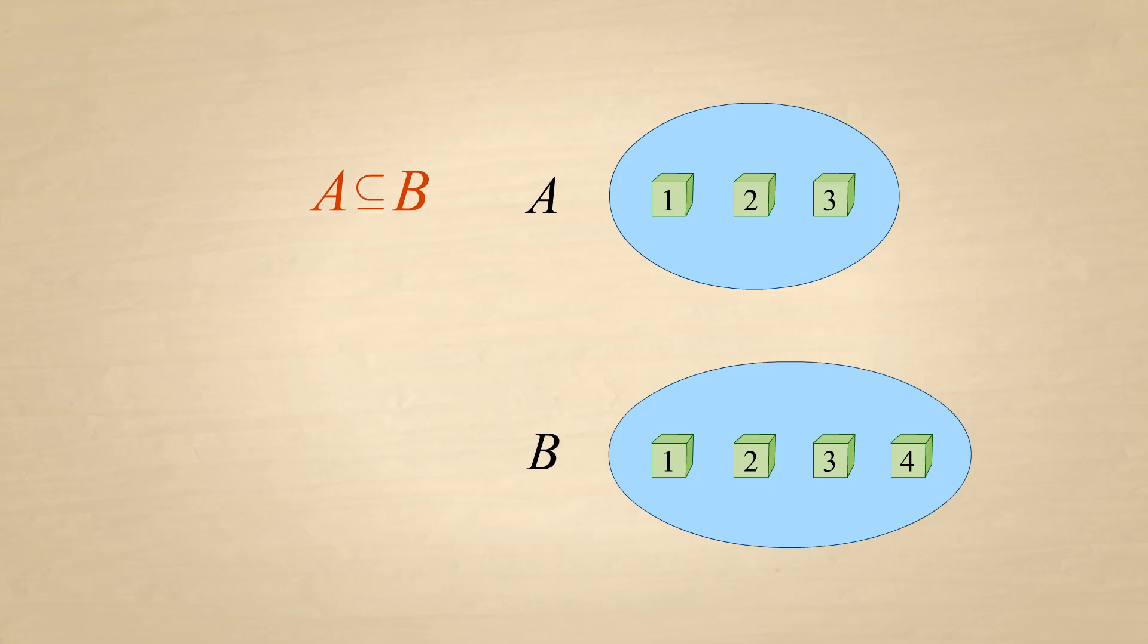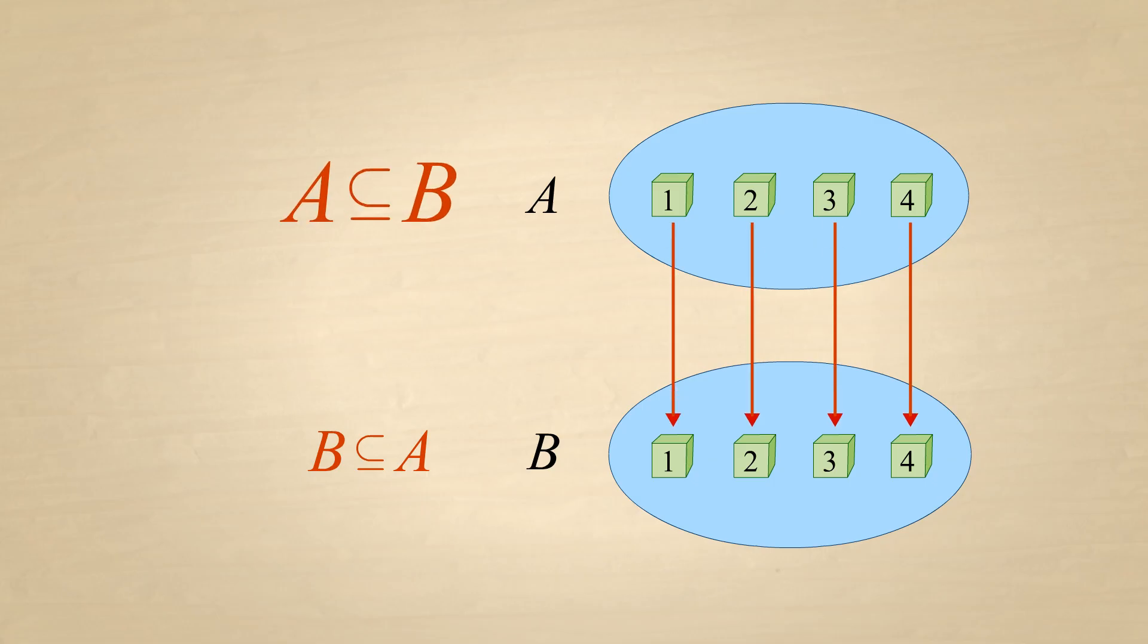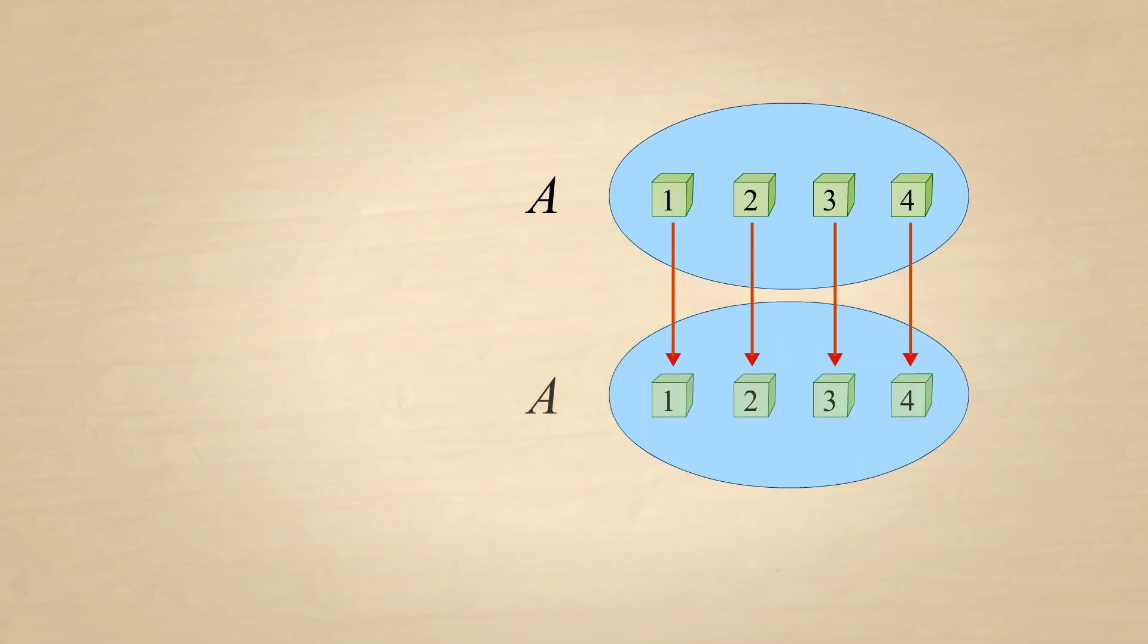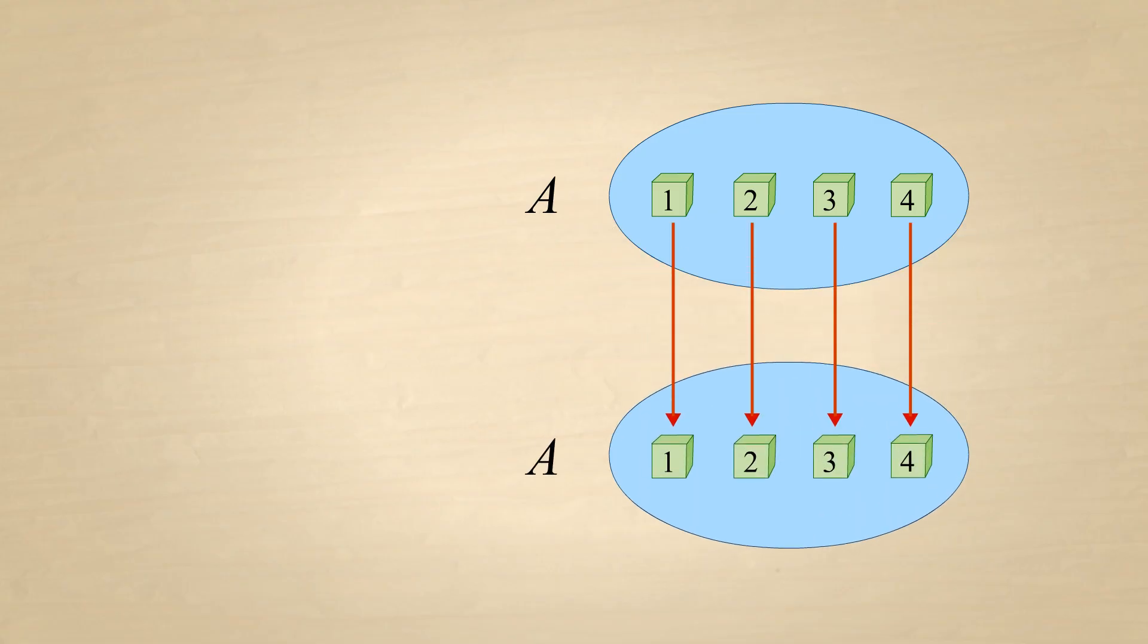If two sets, A and B, are equal, then they are subsets of each other. This is because all the elements of A are members of B, and all the elements of B are also members of A. So any two sets that are equal are subsets of each other. And since every set is equal to itself, every set is also a subset of itself.